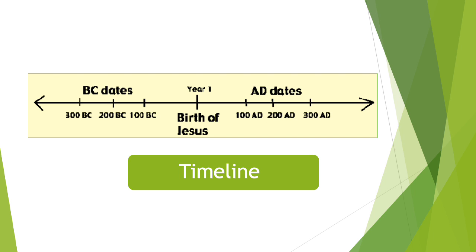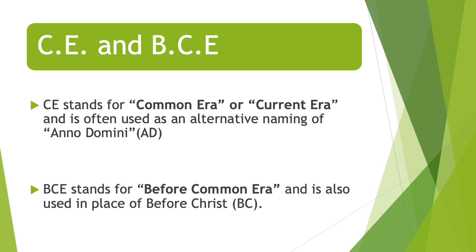Next we come to the concept of CE and BCE. CE stands for Common Era or Current Era and it is a calendar era often used as an alternative naming of the Anno Domini era, or AD. Similarly, BCE stands for Before Common Era and is also used in place of Before Christ, or BC.